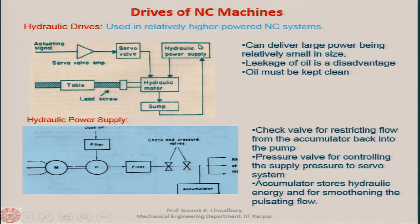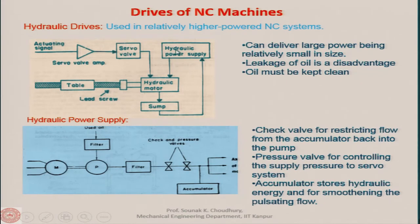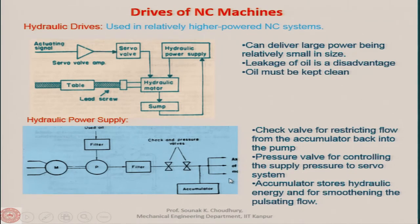The hydraulic power supply has a 3-phase electric motor and a pump. Used oil comes from the sump through a filter to the pump, and from the pump through additional filters the fluid goes through check and pressure valves, then to the different motor axes — x, y, or z. Between the valves and the outlet there is an accumulator.